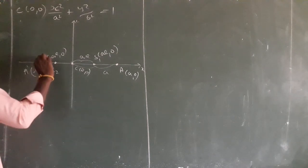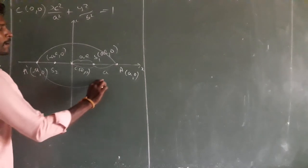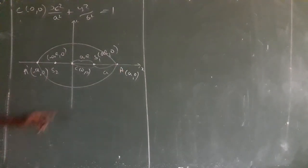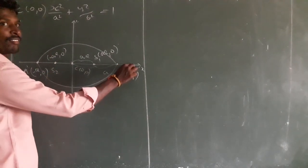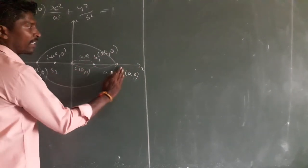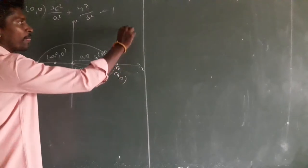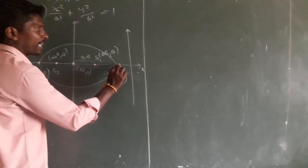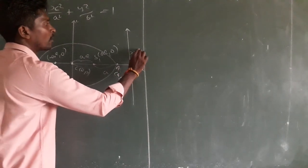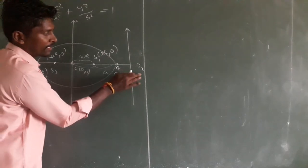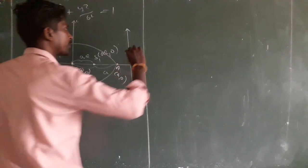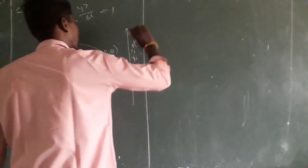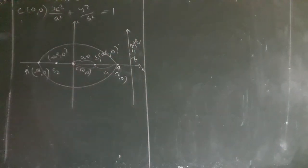So through the focus you can draw the latus rectum. Then what is the equation of directrix? After the vertex A comma 0, the equation of directrix will come. The equation of directrix is x equal to A by E. So x equal to A by E is the equation of directrix.